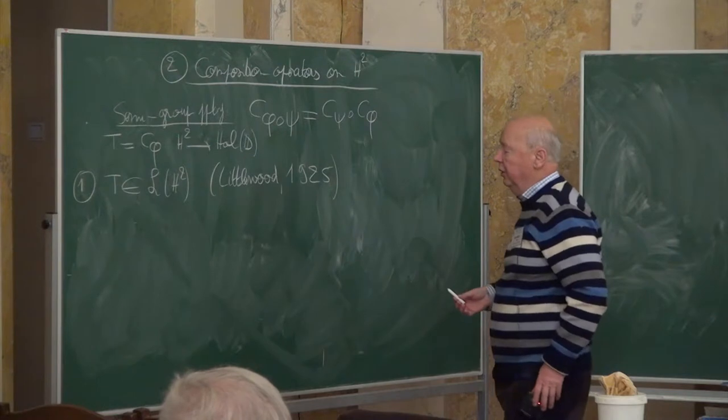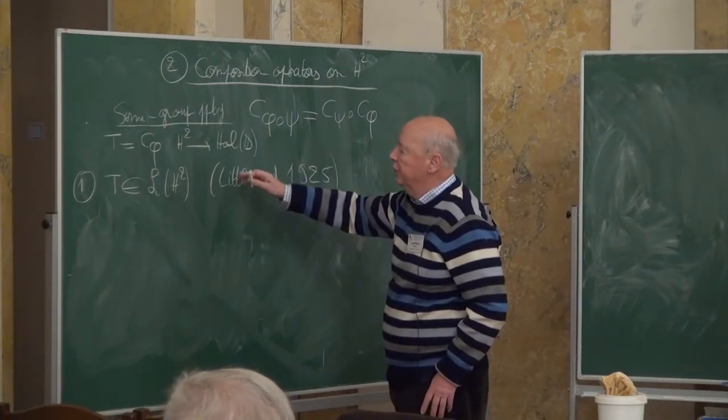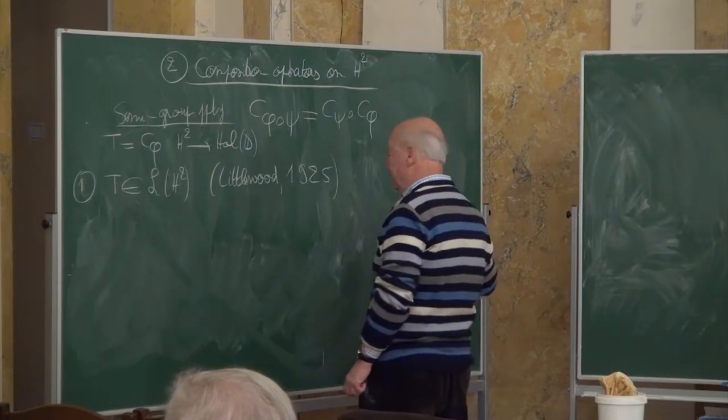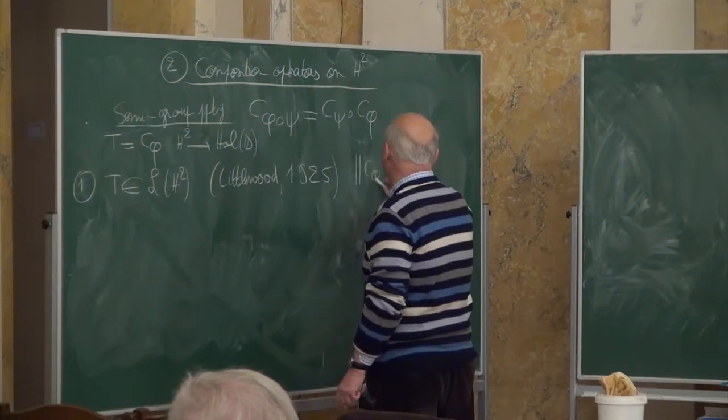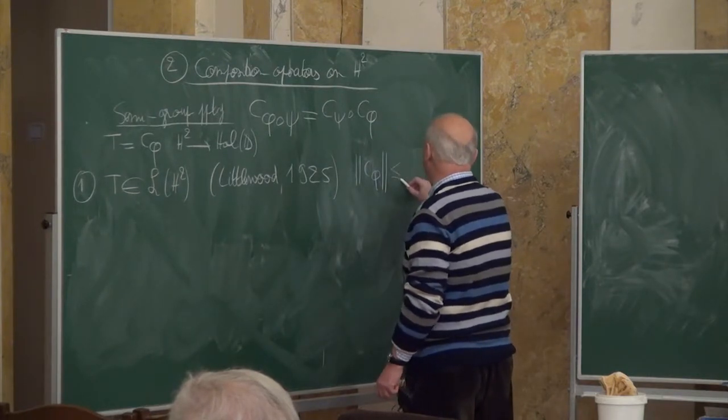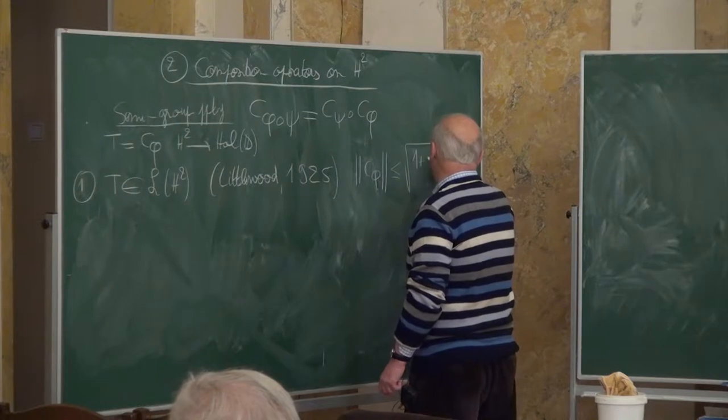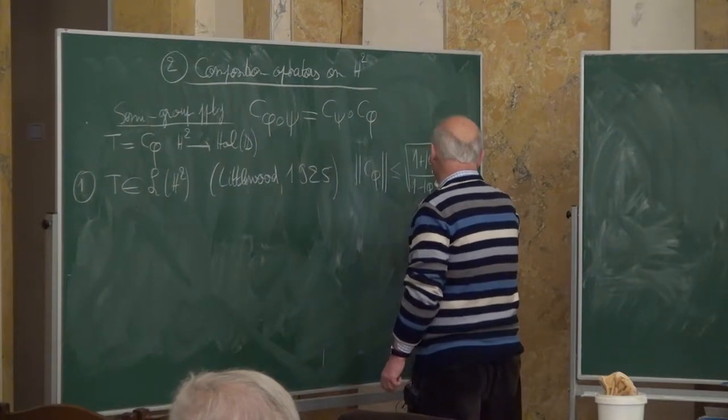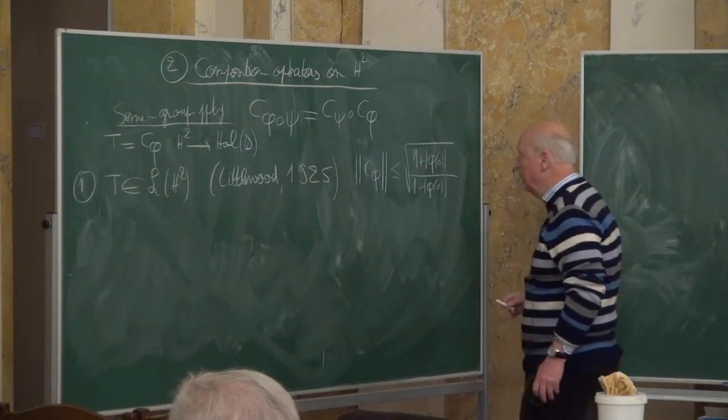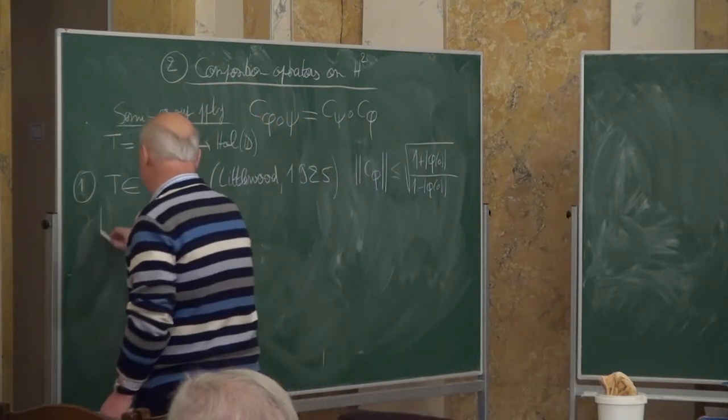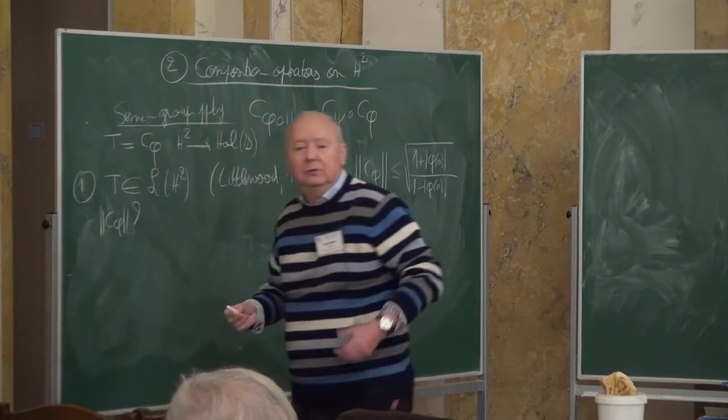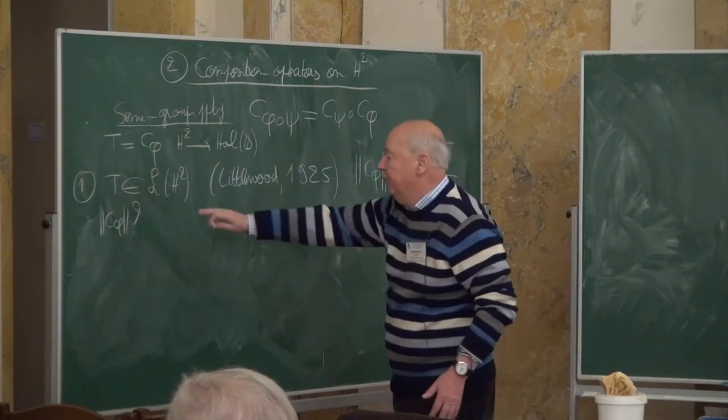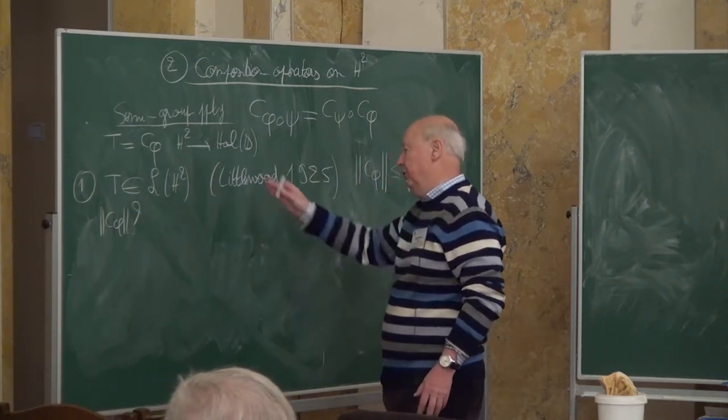There are several proofs. One of them is a delightful use of subharmonic functions. Maybe I will not give the proof for lack of time, but let me mention that. What about the norm of C phi? Well, the norm of C phi is dominated by this quantity: phi times square root of 1 plus mod phi of 0 over 1 minus mod phi of 0. And this is not sharp in general. And what is the norm of C phi? Nobody knows.